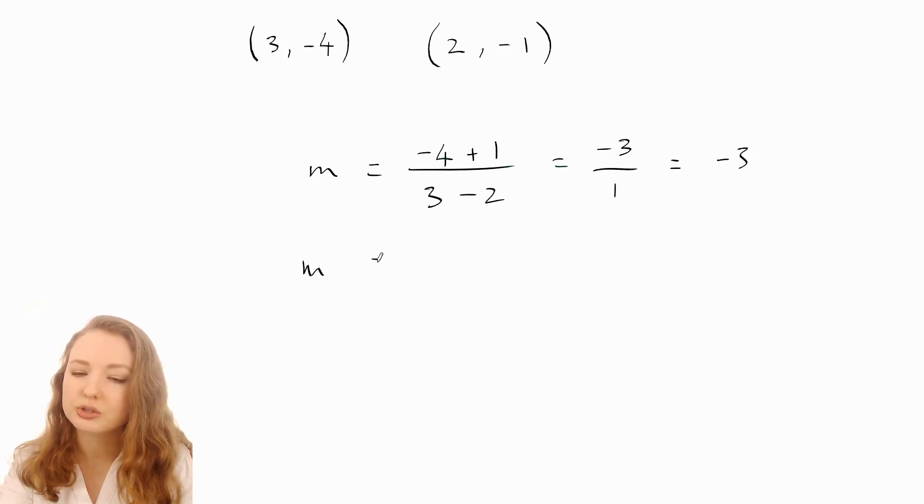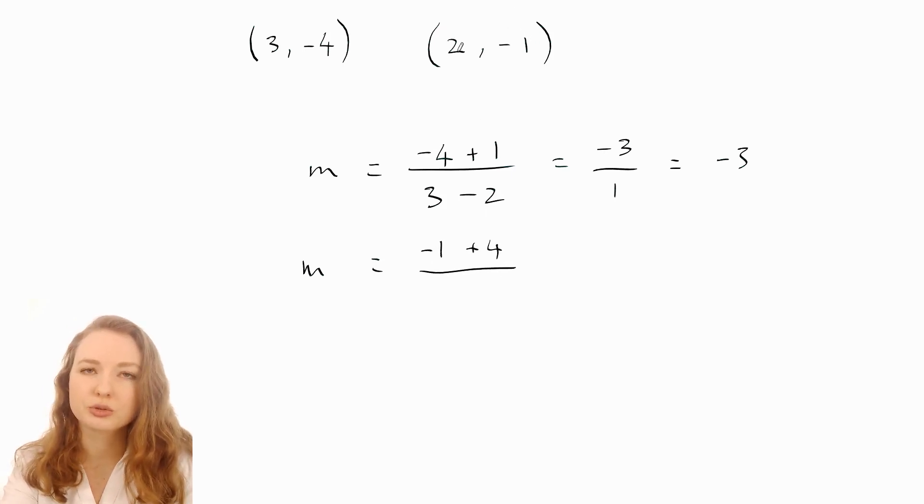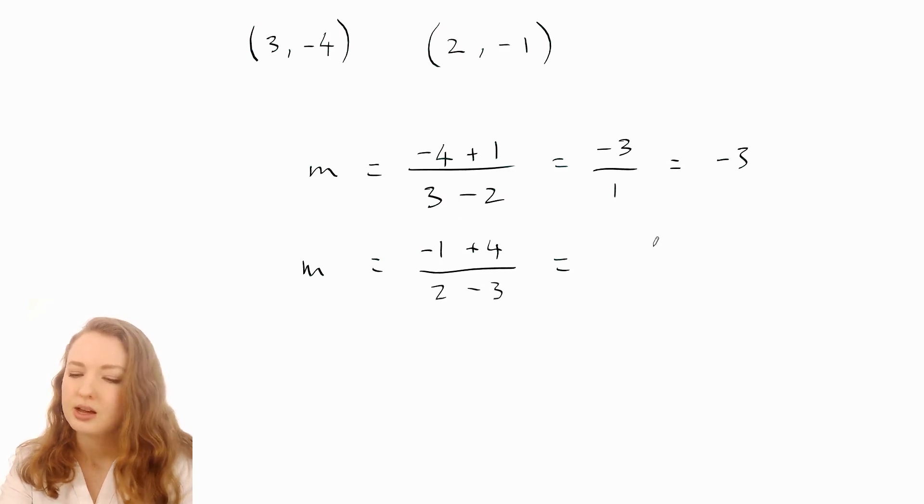You could also have started with the negative one. You can do negative one minus negative four, which is plus four. Then on the bottom, because we started with that one, we have to do the two first. That makes three over negative one, which also simplifies to negative three.